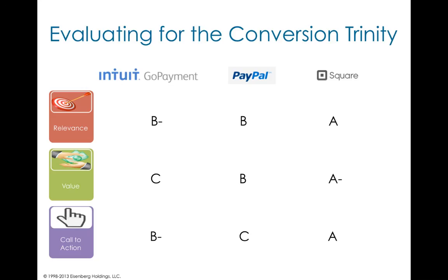When I evaluate each of these based on relevance, value, and call to action, I have to give the benefit to Square on relevance — simple, clean, and right to the point. From a value perspective, I'd go back to Square with an A-minus. There are more details people may want to find out, but they make it simple and clear enough that most people will figure out exactly what it's for, especially with all the buzz around Square readers. From a call-to-action perspective, Square hands-down makes it the nicest and simplest to look at. So go ahead, take a look at your landing pages. You can use these processes to improve your current landing pages, especially for a complex sale like these. Thank you very much.